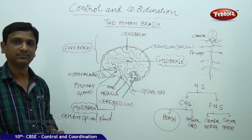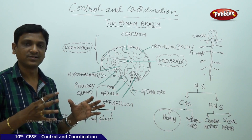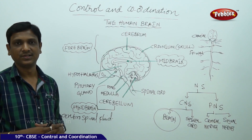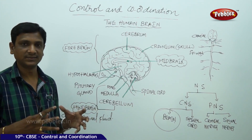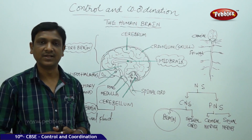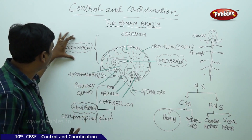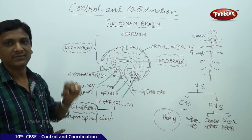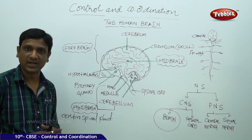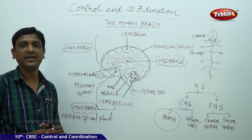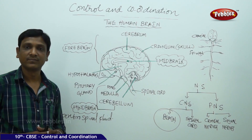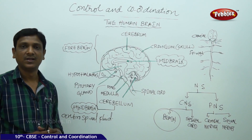The forebrain consists of the cerebrum and has various centers: the olfactory center for reception of smell, the auditory center for reception of sounds. Our sense organs are connected to these centers, where changes in the environment are analyzed and understood. The forebrain is also the place where memory and information are stored. You can memorize answers, questions, formulae, and definitions for your examinations — all of this is done in your forebrain, where data is stored and retrieved.